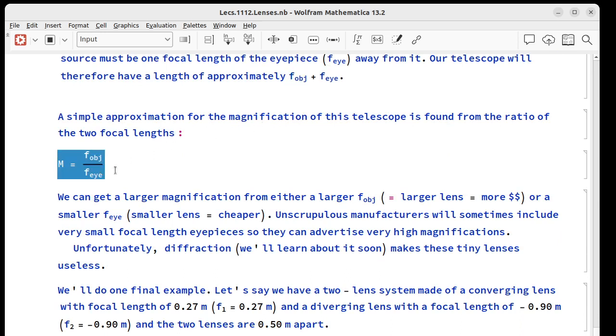If we want to approximate the magnification of a telescope, we would do that by writing the ratio of the focal lengths. To get a larger magnification, we could either use a larger focal length objective, which in general means a larger diameter lens, which means more money. Or we could get a smaller lens with a smaller focal length. These are actually cheaper. The problem is you'll see manufacturers that are kind of scummy put in a very small focal length eyepiece so they can advertise very high magnification. It's not usable though, because of diffraction, which we'll talk about later.